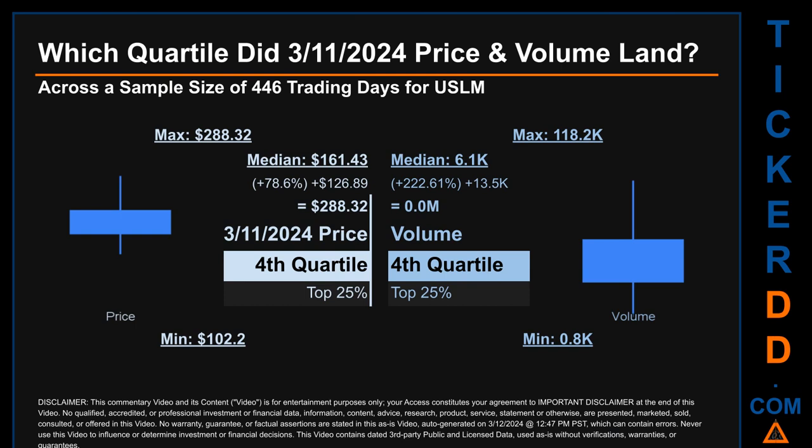The day's volume also landed within the fourth quartile, marking it within the top 25 percent of all sampled daily volume, which saw a max daily volume of 118,200 and a minimum of 800. Quartiles tell us about the spread of a data set by breaking it into quarters, just like how the median breaks the set in half. USLM has a median price of $161.43, so the March 11, 2024 price was higher than that middle marker by 78.6 percent. The day's volume was more than the median by 222.61 percent.